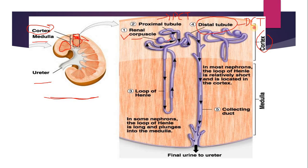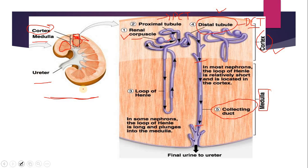That is the distal convoluted tubule. These three parts — PCT, renal corpuscle, and distal convoluted tubule — are present in the cortex, so these are the cortical nephrons, which make up around 85 percent of total nephrons. The remaining part is the loop of Henle and some portion of the collecting duct, which is present in the medulla part of the kidney — this is called the juxtamedullary nephron, around 15 percent of total nephrons.